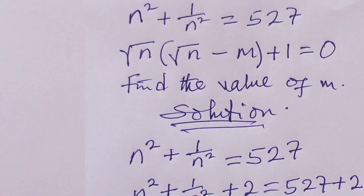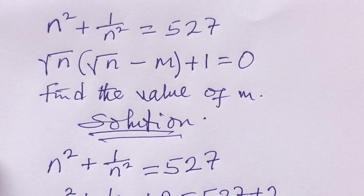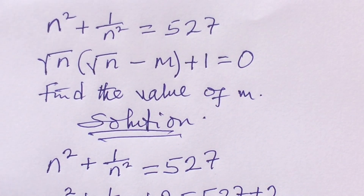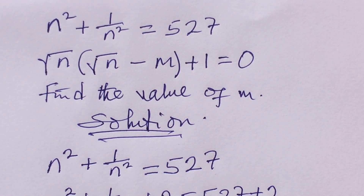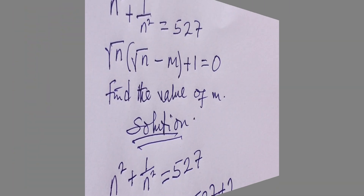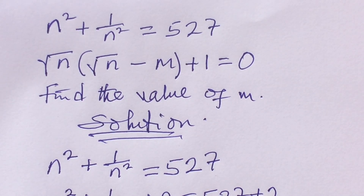So m = 5, which is the value we were asked to find. That marks the end of this math olympiad challenge. If you learned something, give the video a thumbs up, and if you have a better method, drop it in the comments. This is Online Math TV — remember, we love you. Bye for now!